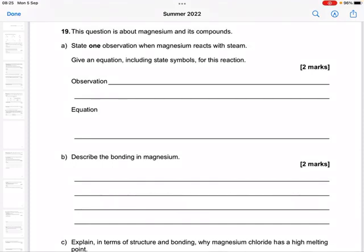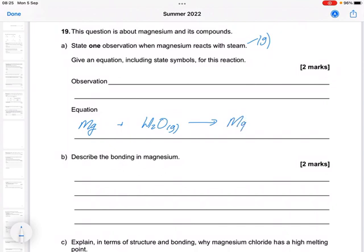Okay, this question is about magnesium and its compounds. State one observation when magnesium reacts with steam. So steam means that one's a gas. If you remember, when magnesium reacts with water as steam, what we end up with is magnesium oxide instead of magnesium hydroxide. That will be a solid with hydrogen gas given off.